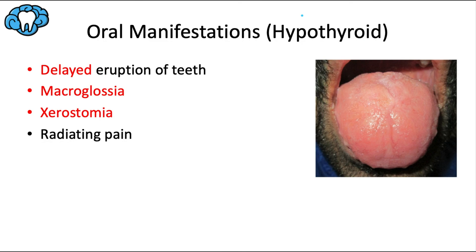Oral manifestations of hypothyroidism are the opposite: delayed eruption of teeth, prolonged exfoliation of primary teeth, and slowly erupting permanent teeth. Macroglossia — an enlarged tongue — is a very common and board-relevant finding in hypothyroid patients. Low salivary flow and xerostomia are also likely, and radiating pain may be present if Hashimoto's thyroiditis is the underlying cause.